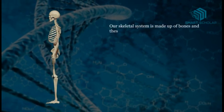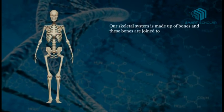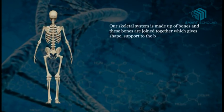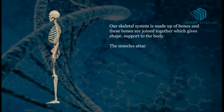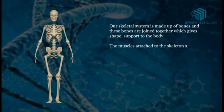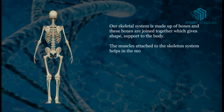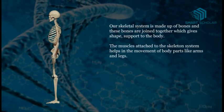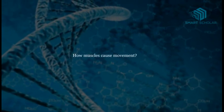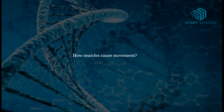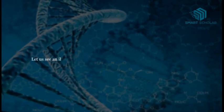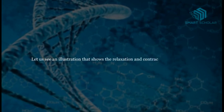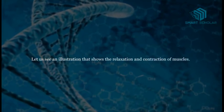Our skeletal system is made up of bones and these bones are joined together, which gives shape and support to the body. The muscles attached to the skeletal system help in the movement of body parts like arms and legs. Let us see an illustration that shows the relaxation and contraction of muscles.